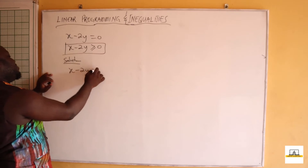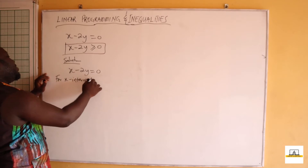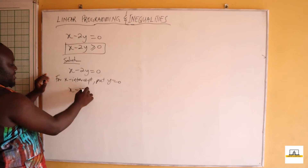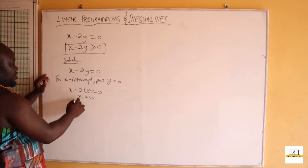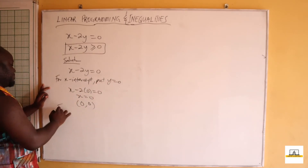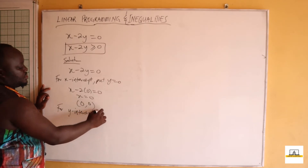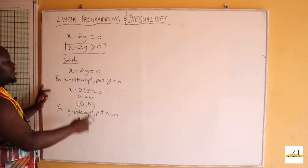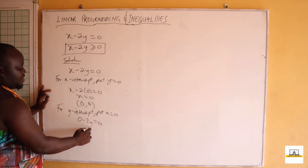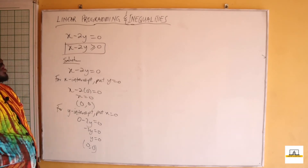For x minus 2y equals zero, the x-intercept is found by putting y equals zero: x minus 2 times 0 equals zero, so x equals zero. For the y-intercept, put x equals zero: zero minus 2y equals zero, so y equals zero. Both intercepts give us the point (0, 0).